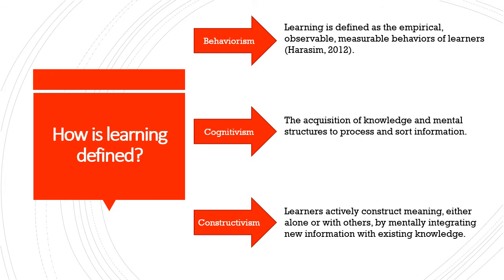Learning is defined differently according to each theory. For Behaviorism, learning is defined as the empirical, observable, and measurable behaviors of learners. In Cognitivism, learning is the acquisition of knowledge and mental structures to process and sort information. The focus is on the formation of the student's learning process and how information is received, organized, stored, and retrieved in the mind. It's not what learners do, but what they know.